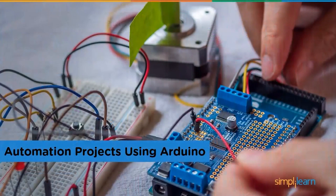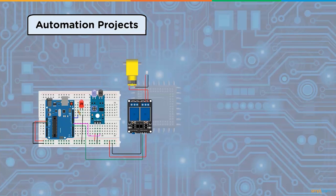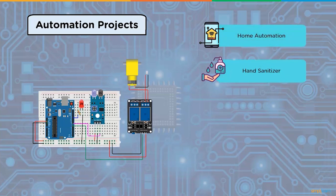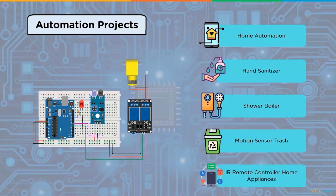Automation projects using Arduino: the robust characteristics of Arduino are well suited to automation applications. Automation has brought convenience to a whole new level — from controlling room lights with your smartphone to automatically organizing events. Instead of using mechanical switches, you can operate all home electronics from your hand. Projects include home automation, sanitizer dispenser, automated shower boiler, automatic motion sensor trash, and IR remote controller home appliances.